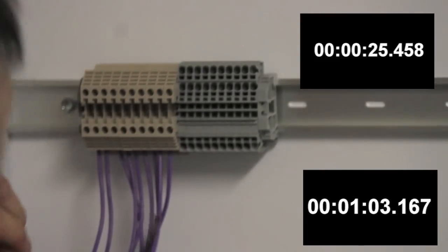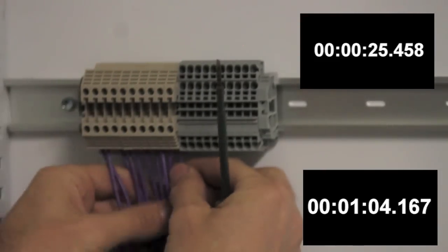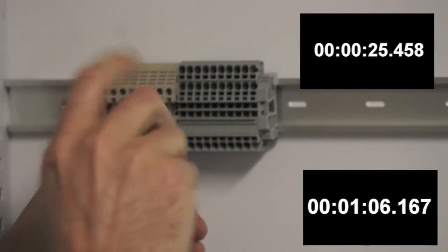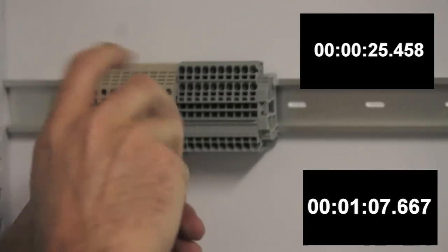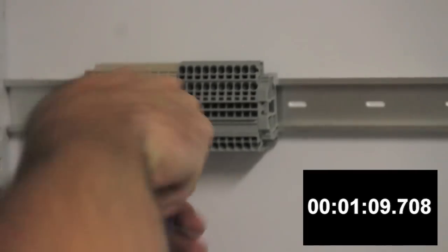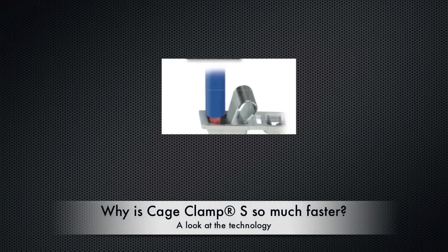I'm just landing the 10th wire here on the standard terminal block and you can see that the clock will finish here around a minute and 10 seconds. So the cage clamp is more than twice as fast in this example. So let's take a look at why that is.